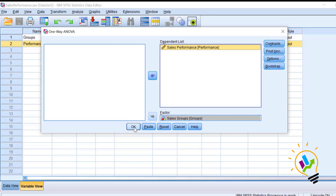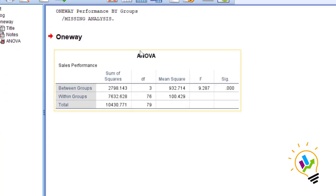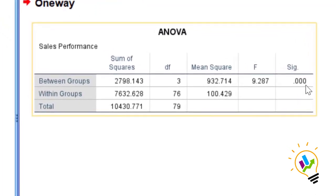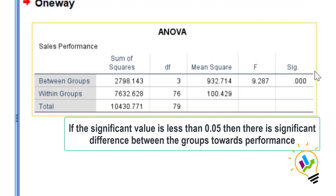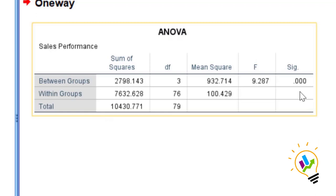Take the categorical group data as the factor and sales performance (scale data) as the dependent list, then click OK. In the output, we can see the ANOVA table. The significant value is 0.000, which is less than 0.05.